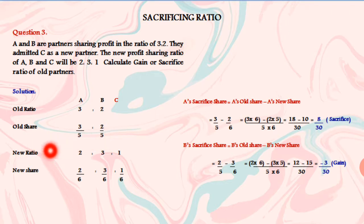We have a new ratio 2 is to 3 is to 1. That is the new share. 2 plus 3 plus 1 equals 6. The total is 6. So 2 by 6 for A, 3 by 6 for B, and C is 1 by 6.